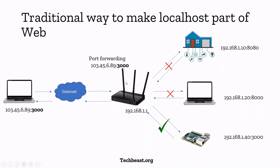For example, if I want to access my Raspberry Pi running on port 3000, I log into my router and add a rule to forward port 3000 to my Raspberry Pi. So whenever I search 103.45.6.89:3000 in my browser, the HTTP request goes straight to my home router, and the router forwards it to the Raspberry Pi. But this is a complex process for many devices, and directly exposing your router to the internet introduces security risks.